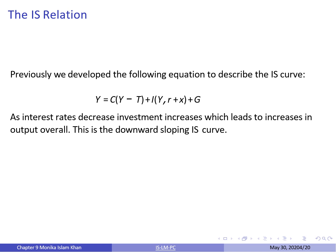We have developed the following equation to describe the IS curve. In the short run, output is determined by demand. Demand is the sum of consumption, investment, and government spending. Consumption depends on disposable income, which is income minus taxes. Consumption also depends on output and the real borrowing rate or real interest rate, which is the sum of the real policy rate R and the risk premium X. Government spending is thought to be exogenous.